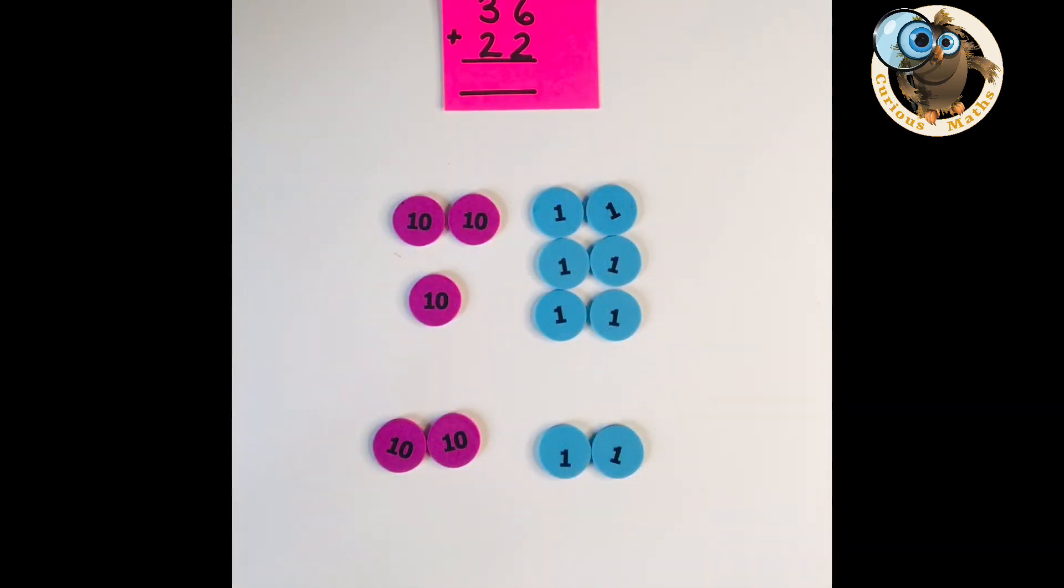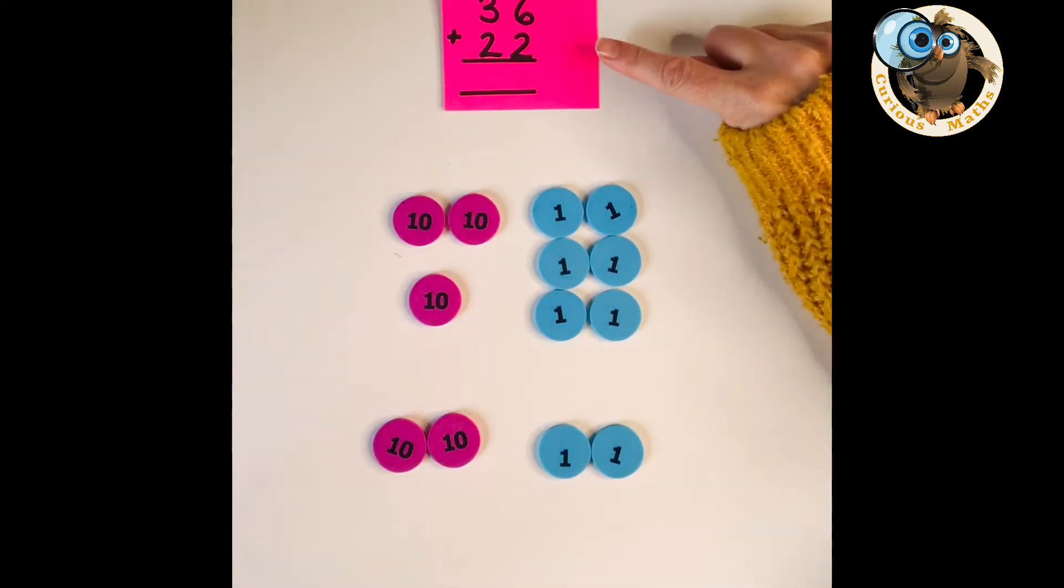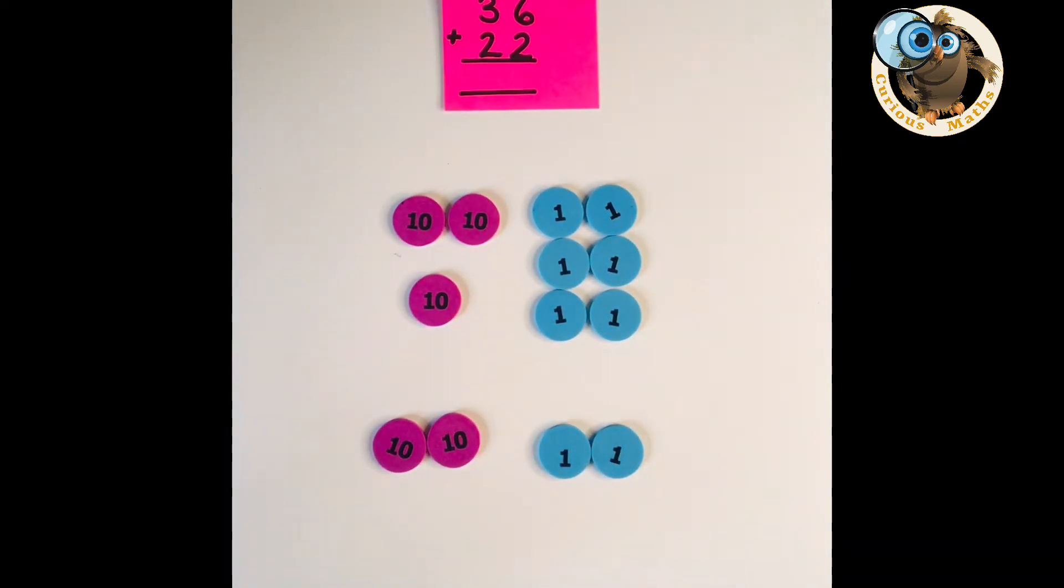And finally here is the same build with place value counters so children are getting the opportunity to make the calculation. I would put an addition sign in there and an equal sign and they can represent the answer using the manipulative that they have used. They could then go to the right and they could fill it in based on what they found out.